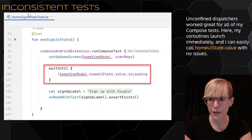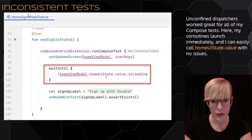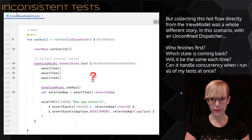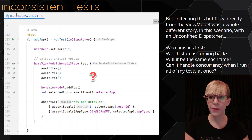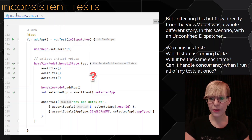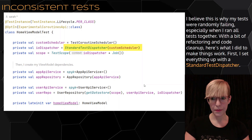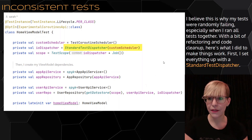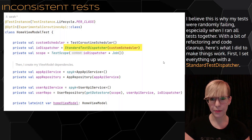Unconfined dispatchers work great for all of my Compose tests — my coroutines launch immediately, and I can easily call home UI state value with no issues. But collecting this hot flow directly from the view model was a whole different story. In this scenario with an unconfined dispatcher, who finishes first? Which state is actually coming back? Will it be the same every time? Can it handle concurrency when I run all of my tests at once? I believe this is why my tests were randomly failing, especially when I run all of my tests together.